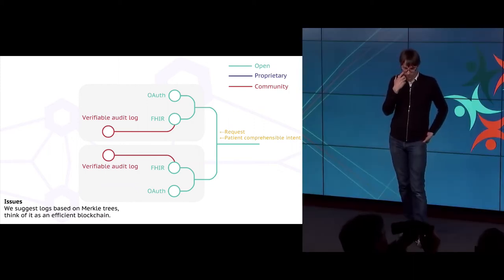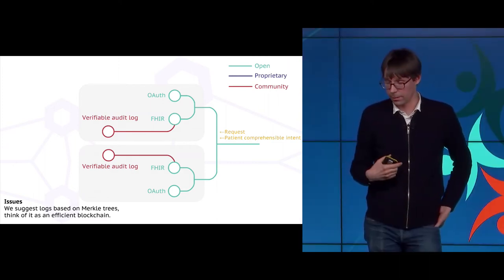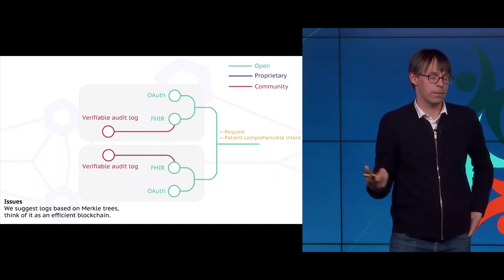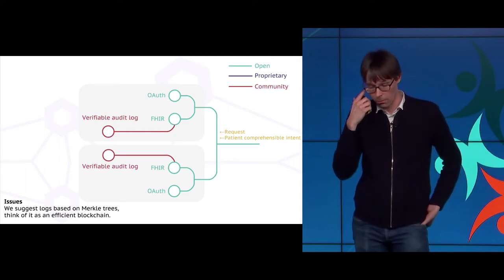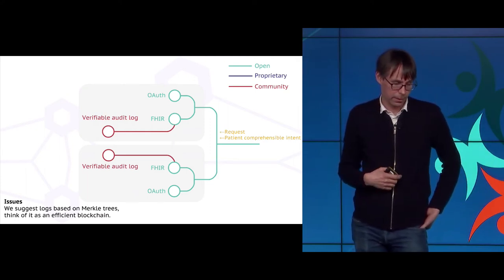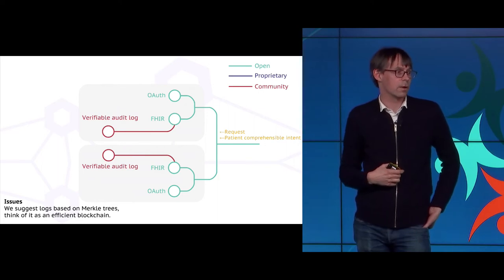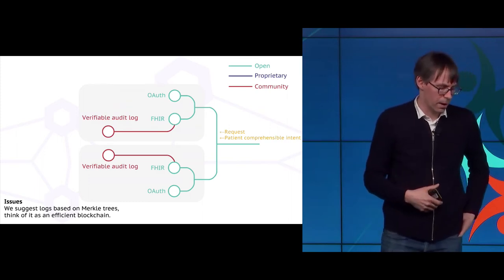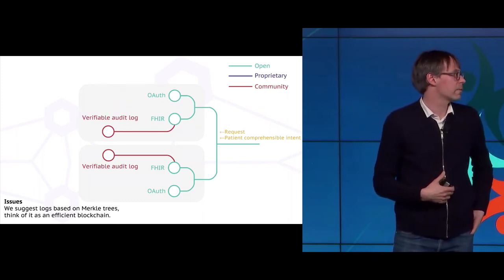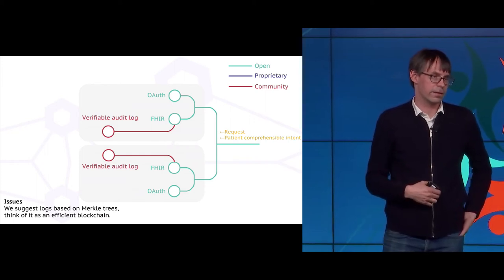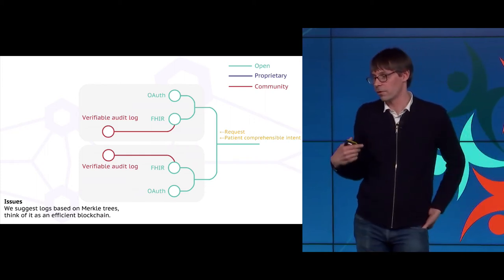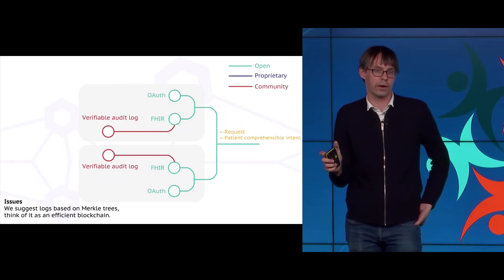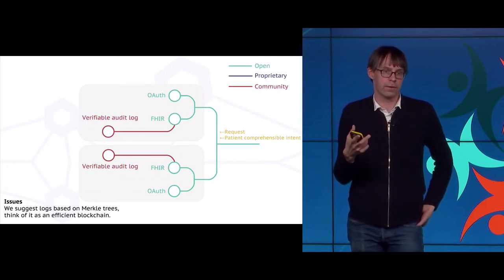There's been a lot of work recently in computer science about verifiable data structures — data structures that have integrity properties. Probably the most famous one is blockchain, as used by cryptocurrency. But blockchain is only one of a very large family of structures that provide integrity guarantees. There are others, such as Merkle trees, that are a much faster and more efficient way of guaranteeing integrity in the presence of verifiers. You can imagine a world where every request for patient data, and the reason it was requested, is logged in a data structure with guarantees about whether it's ever been tampered with.